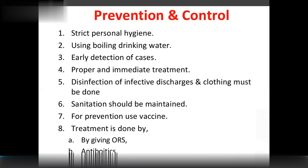Prevention and control of cholera: maintain personal hygiene, boil drinking water, early detection of cases, proper and immediate treatment, disinfection of infective discharges and clothing. Sanitation should be maintained. For prevention, use vaccination, give ORS, and antibiotics.